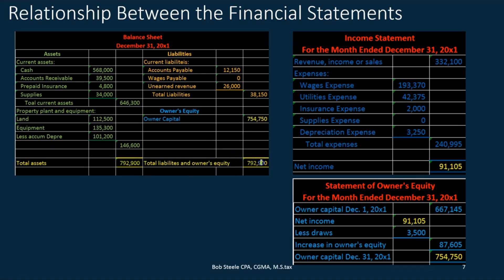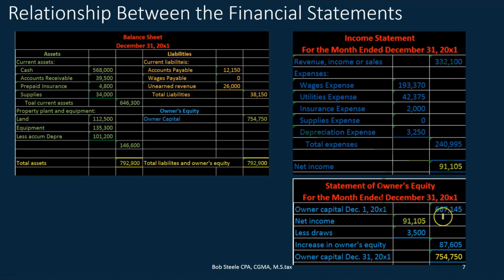This total assets number is of course going to equal the total liabilities and equity number. The equity account represents the book value of the company — we have this much in assets minus what we owe people, meaning this is the book value, the worth of the company. With only one owner, it's all that owner's worth. Theoretically, if we sold the business, we could sell all the assets, pay off the liabilities, and walk away with that much money. The income statement tells us more about that equity number — looking back one month in time we see income and expenses. That net income feeds into the statement of owner's equity, along with the beginning balance and draws, giving us our ending equity — which equals the equity account on the balance sheet. We're getting the full story behind the equity account.